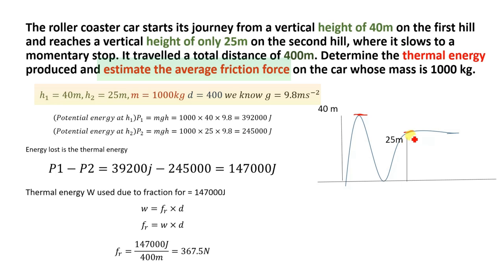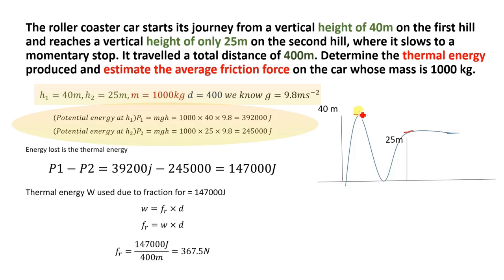The given data: height h1 is 40 meters, height h2 is 25 meters, mass of the roller coaster is 1000 kilograms, the total distance traveled by the roller coaster is 400 meters, and the gravitational constant is 9.8 meters per second squared.